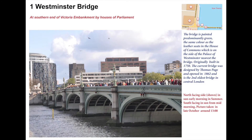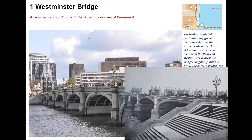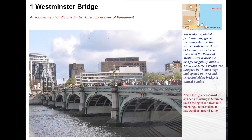At the start of the run we have Westminster Bridge, which was built in 1750 — the first bridge between here and London Bridge. As you can see it's green, which represents the colour of the House of Commons. However, the bridge you see today dates back to 1862. We'll come back to Westminster Bridge later because we see it several times during this tour.